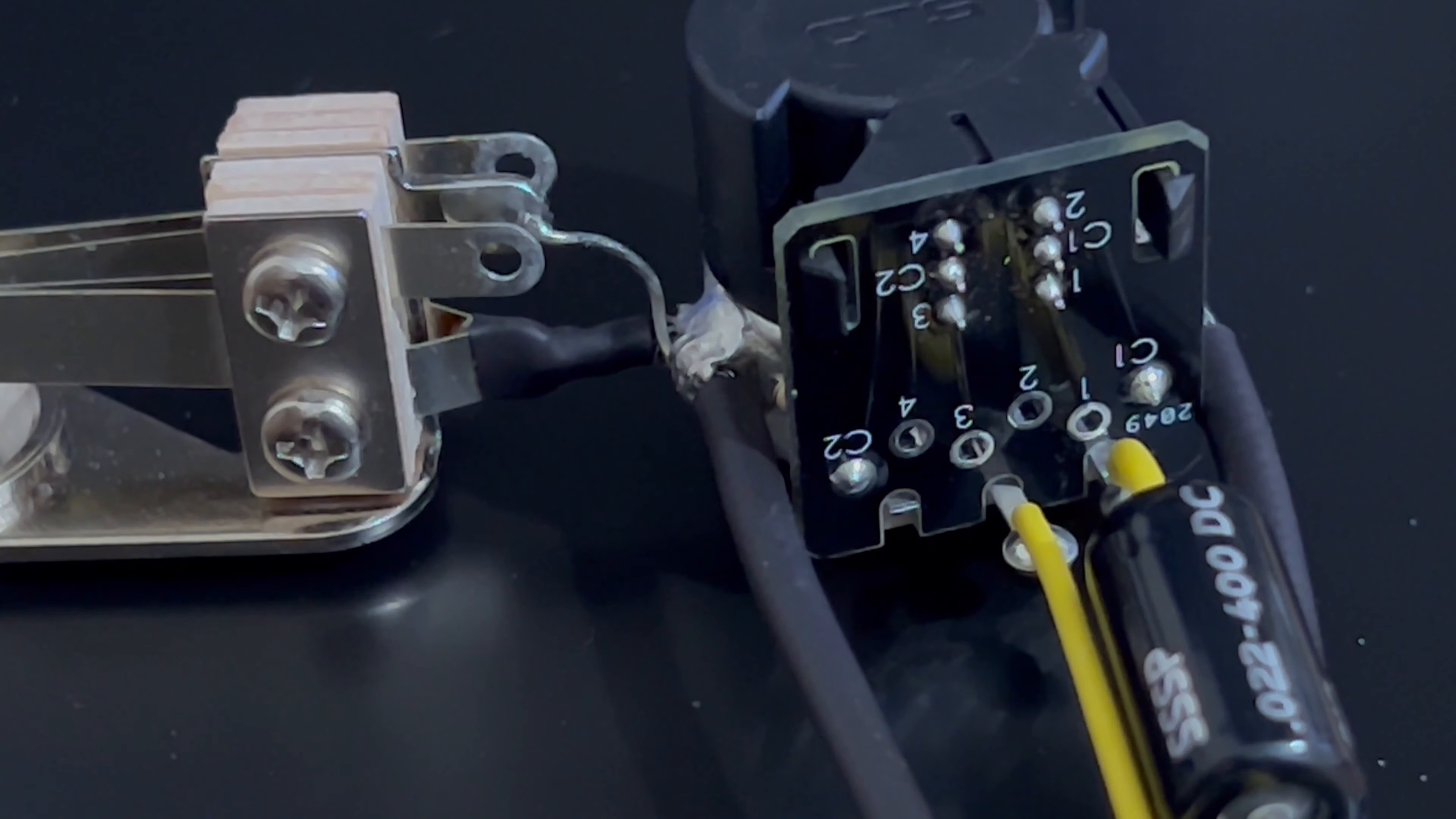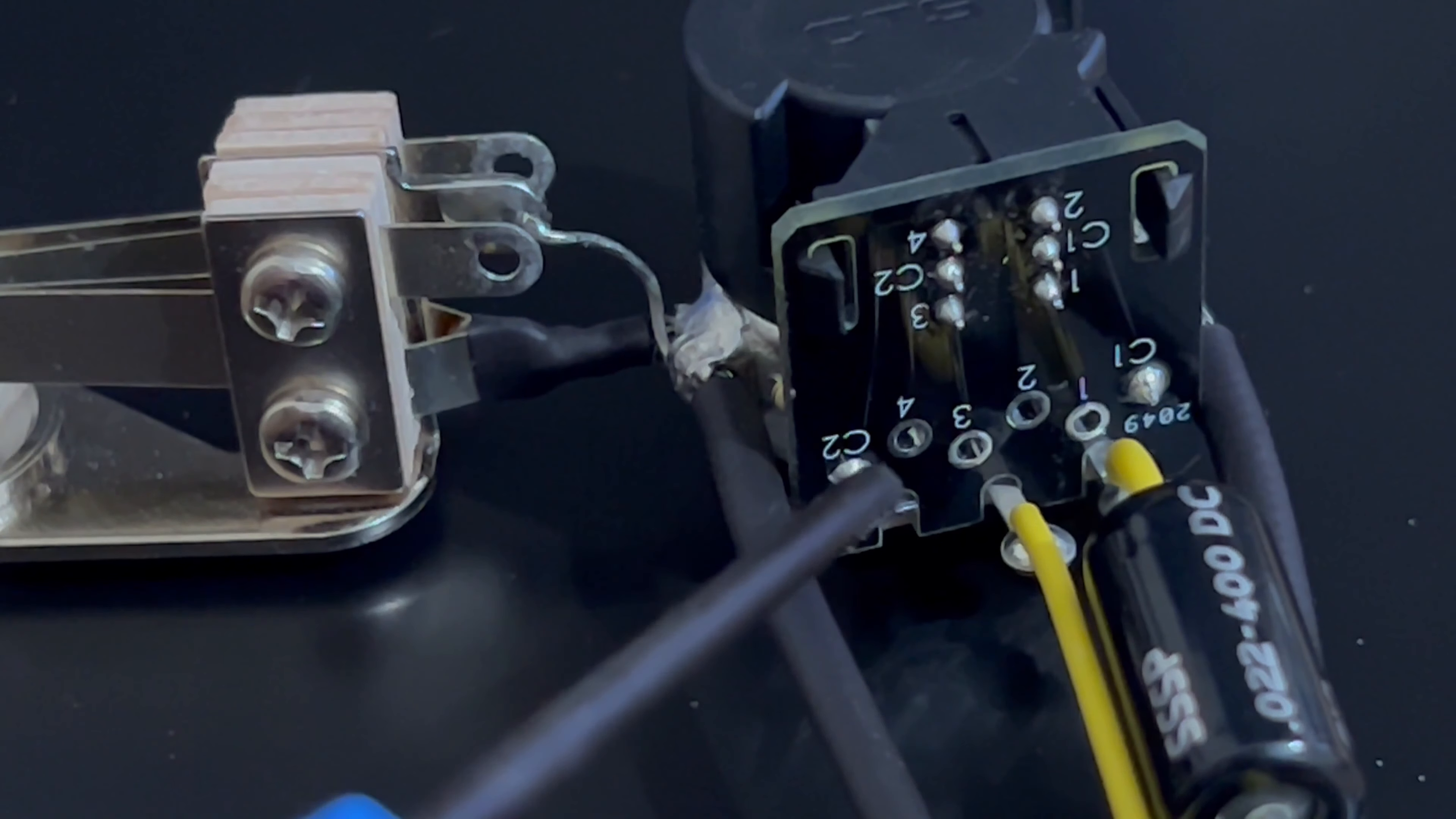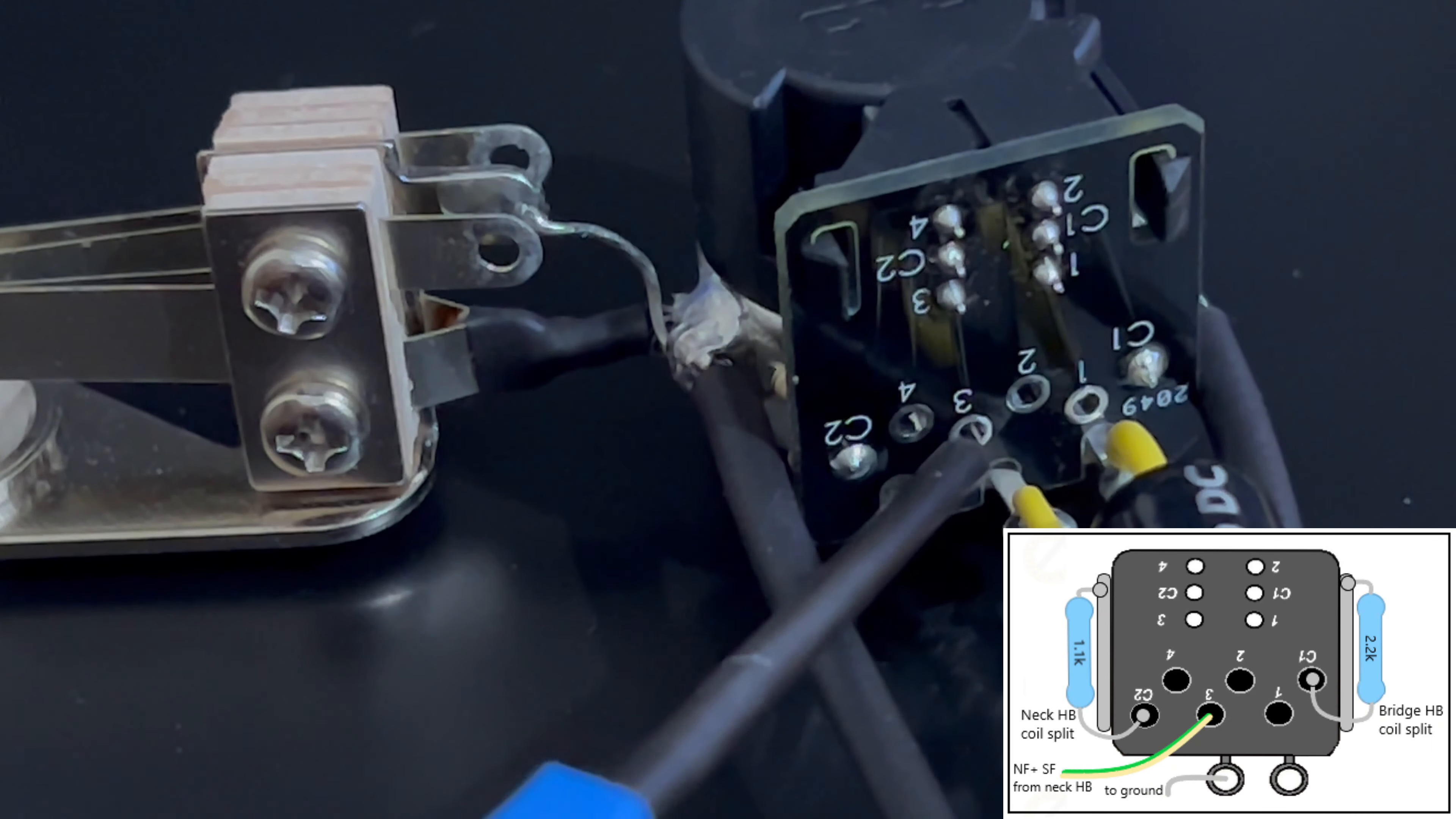Now for the coil splitting. So for coil splitting, you need to take the north finish and south finish wires of each humbucker, twist them together, and solder them together. So for your neck pickup, the north finish and south finish are going to be soldered into hole 3, just there on the CTS push-pull pot.